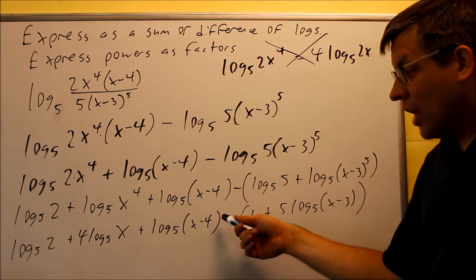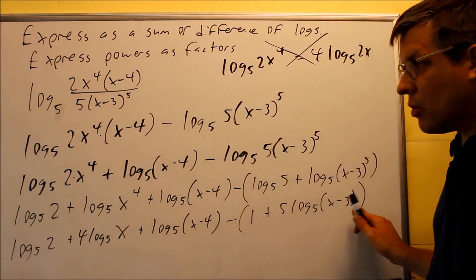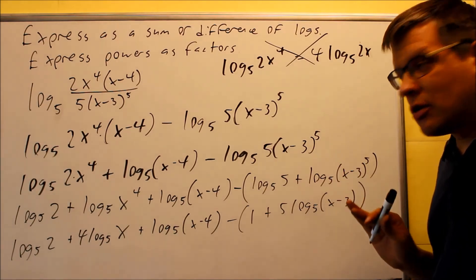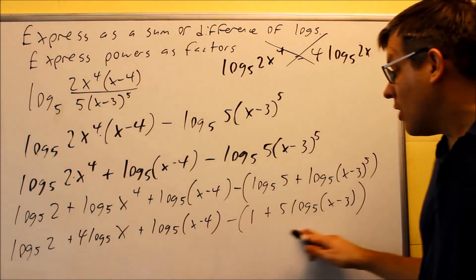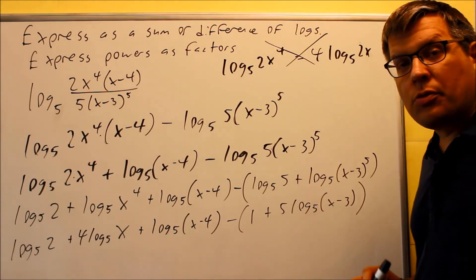This power got brought down. This one didn't have a power. This would be your full expanded answer. This is probably the most complicated example of this type that you're going to see. Again, you can either leave it like this, or you can distribute the minus sign all the way through. Either one of those would be correct.